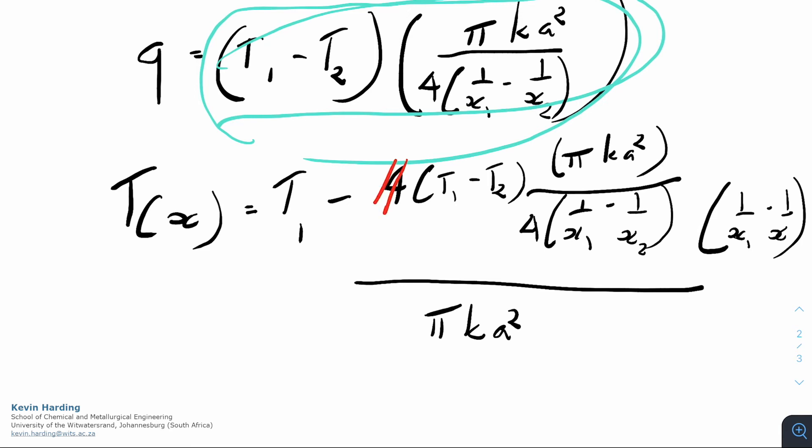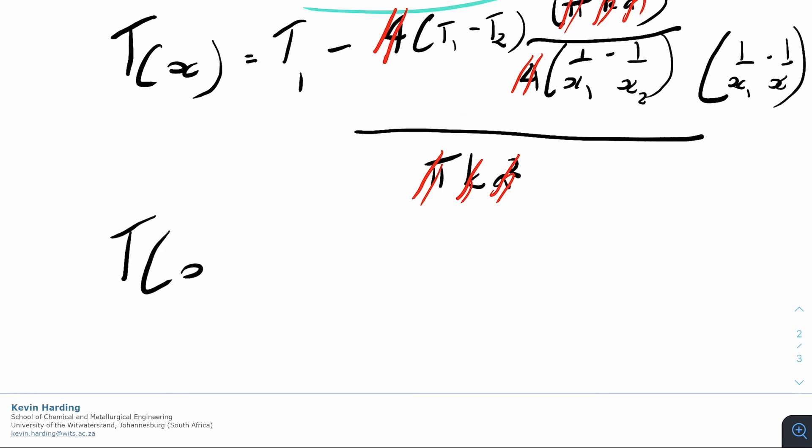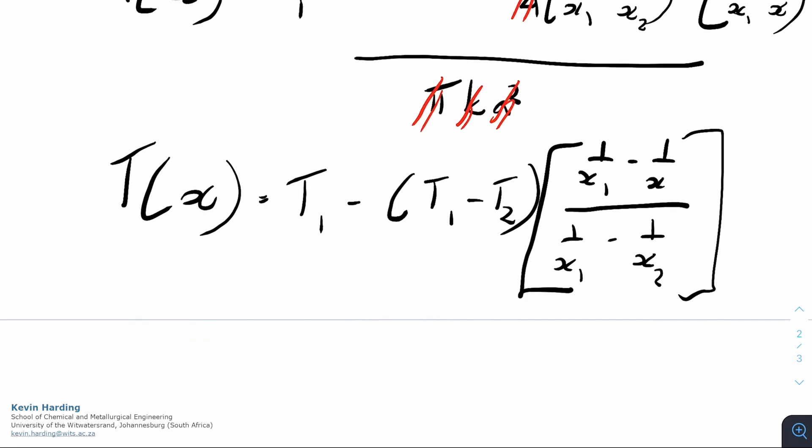If you look at some of these terms now, there's a 4 that will cancel with a 4, a pi a pi, a k a k, a squared a squared, and a couple of others. We can then rewrite temperature x, so temperature x is the temperature profile through this, will equal t1 minus t1 minus t2 multiplied by 1 on x1 minus 1 on x, all divided by 1 on x1 minus 1 on x2. And that is the temperature profile that they've asked us for in part a.